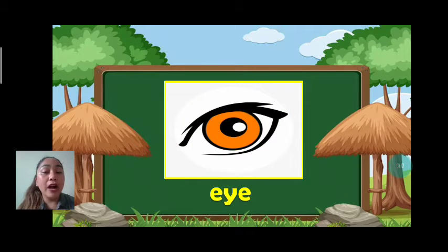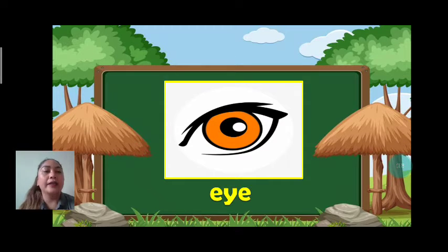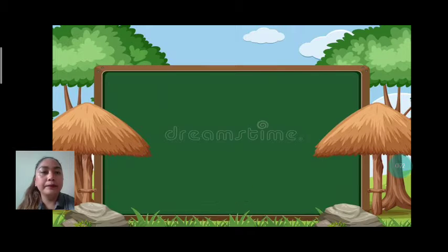Next, we have eye. Let's spell: E-Y-E. What part of the bird? It's an eye.